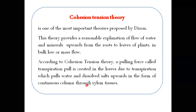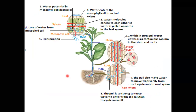Cohesion tension theory ke mutabiq, plant ke leaves mein transpiration ki wajah se ek pulling force create hoti hai jise transpiration pull kehte hain. Pehle ye bata dete hain ke transpiration kya hai: transpiration is the loss of water from the aerial parts of the plant, especially from the leaves through stomata.